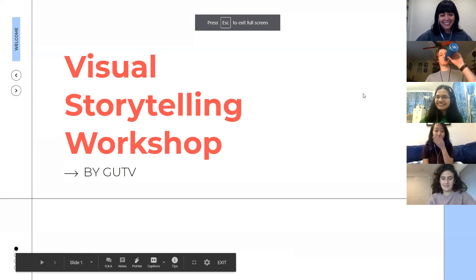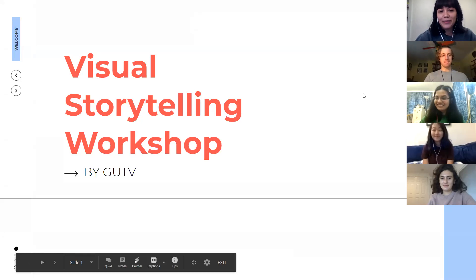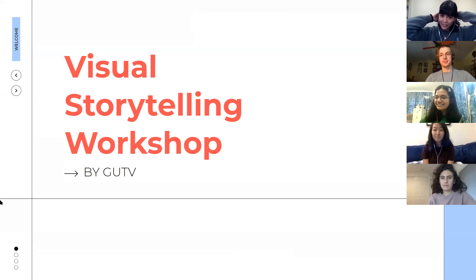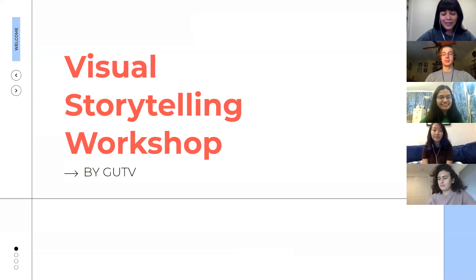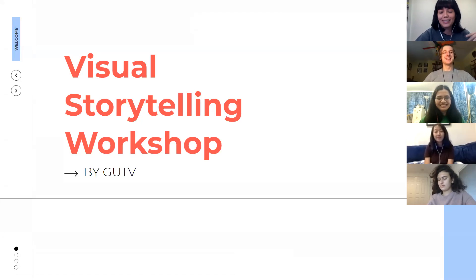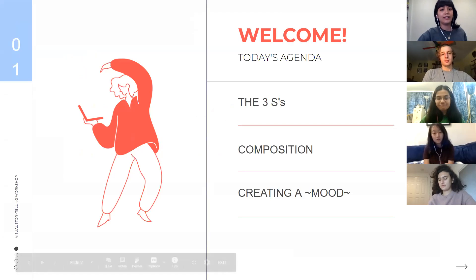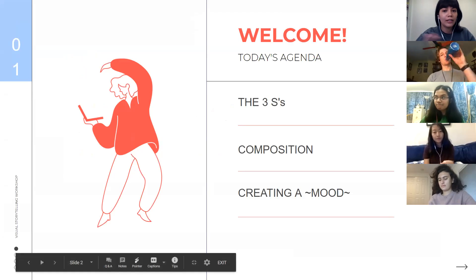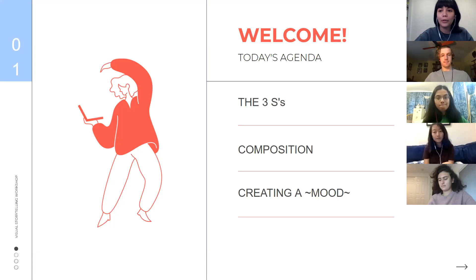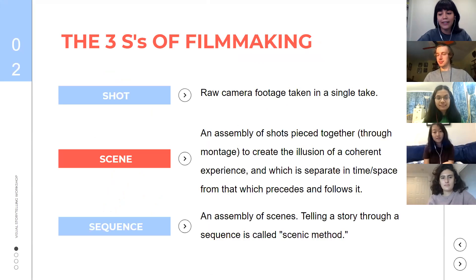Hi — we'll record this for the sake of having something to show for it. This is a visual storytelling workshop that teaches you how to tell stories visually. So there are three main parts to the workshop today: the three S's of filmmaking, which I'll explain, composition, and creating a mood. If you don't know what that means, that's fine because we'll get into it.